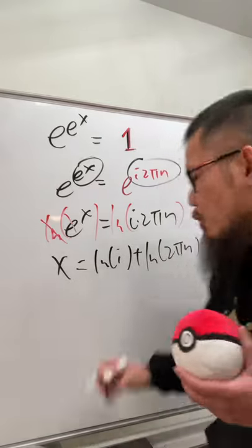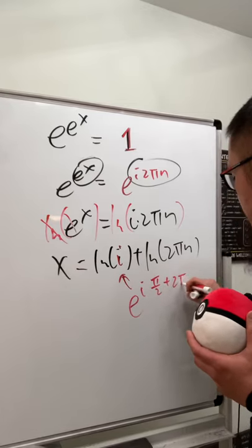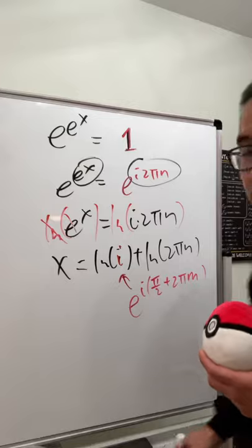And now what's ln i? Of course, look at the i as what? Well, we have e to the i pi over 2 plus 2 pi n, because we use n over here already.